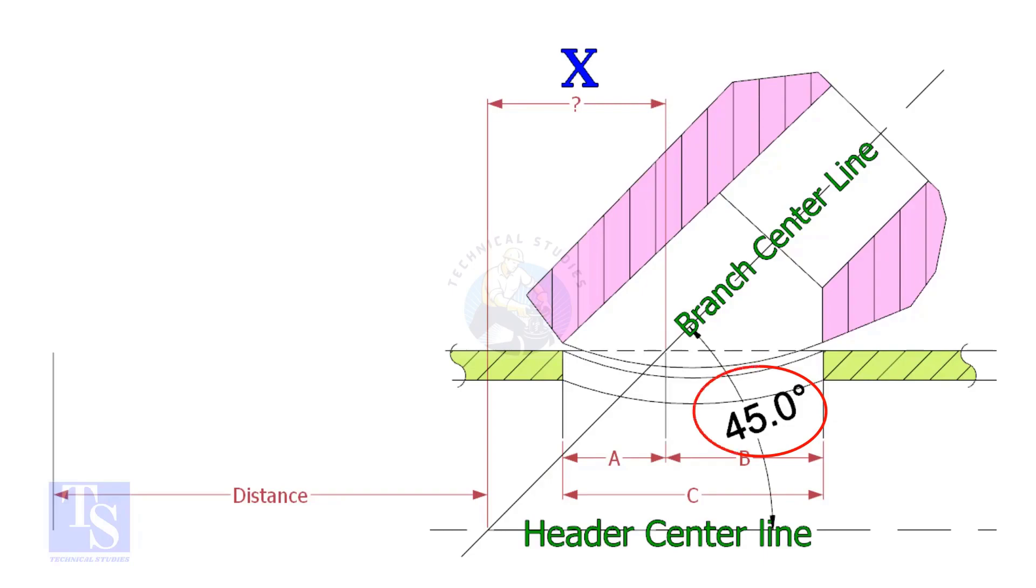If the including angle is 45 degrees, the value of x will be always half OD of the header. Suppose the OD of the header is 400 millimeters, then the value of x will be 200 millimeters.